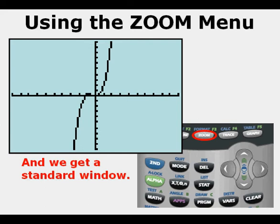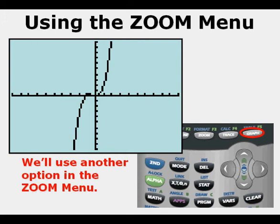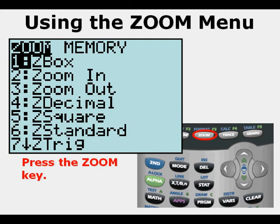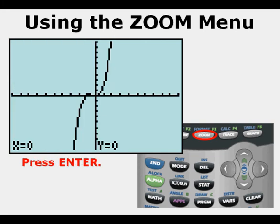Now we'll use that graph found in the standard window and try to evaluate it using another feature from the Zoom menu. We want a real good view of the function where it crosses the x-axis to see what is happening — zeros and so forth — but it's congested and we cannot see it that well. Press the Zoom key and we're going to use Option 1, Zoom Box. Press Enter to choose Option 1, Zoom Box.